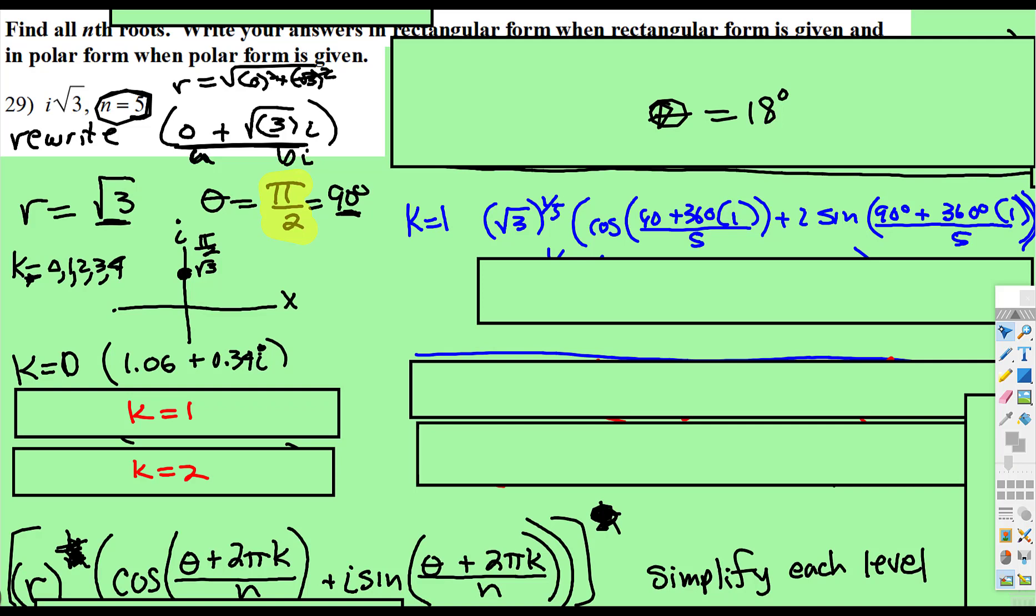All right, so now we're going to plug everything in. And then, ⁵√3, cosine 90, 90 degrees plus 360 degrees times 1, our k is now 1, all divided by 5. Well, 360 plus 90 is 450, 450 divide 5 is 90.